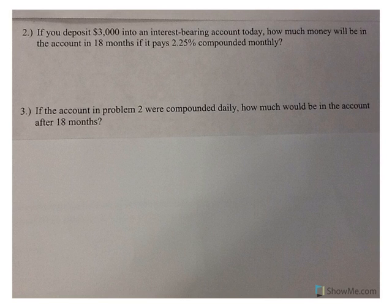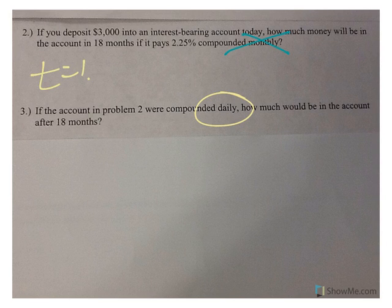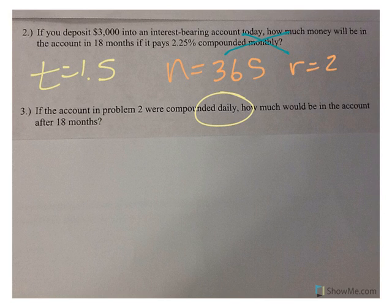Now, in number three, we're going to use the same information, but it says, now we're going to compound daily. So, we're taking out monthly, and we're doing daily. So, we still have T equals 1.5. Now, N is daily. There are 365 days in a year. We are still using the rate of 2.25% and the principal of 3,000.